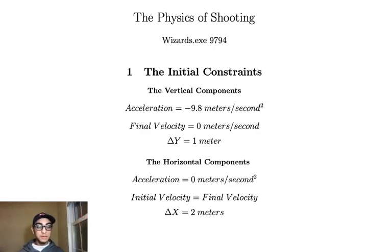And the horizontal components, we're going to assume that acceleration is 0, so there's no effect from air resistance or any other frictions. And the initial velocity is going to equal the final velocity, and that's because the acceleration is 0, so that won't change. And the displacement in the x direction is going to be 2 meters, so we're going to be shooting 2 meters away.